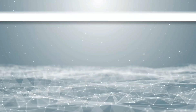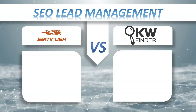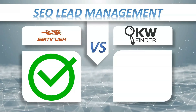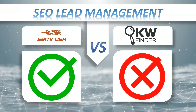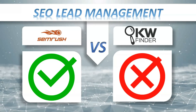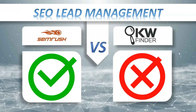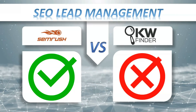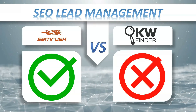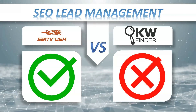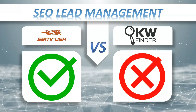SEO lead management: SEMrush has it, KWFinder doesn't have it. The lead generation tool gives you a custom widget to place on your website that collects email addresses from website visitors in exchange for a sample website audit. With this tool you'll be able to passively gather business leads for your online agency or service.